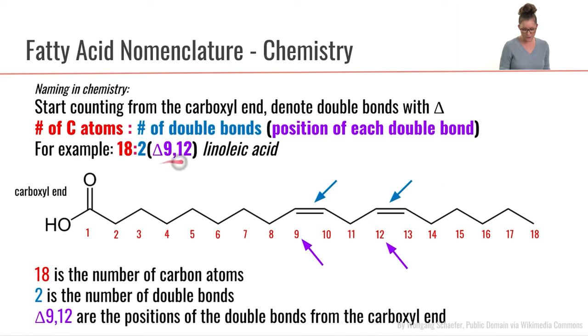We would see our first double bond would occur at carbon number nine, so that's delta nine. And then our second double bond is occurring over here at delta 12. So the whole way that one would be written is 18-2-delta-9,12. Again, that's linoleic acid.